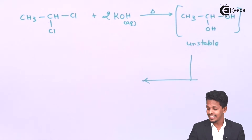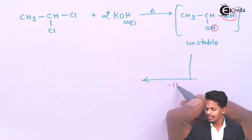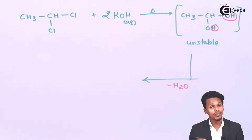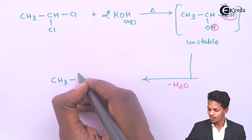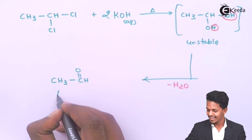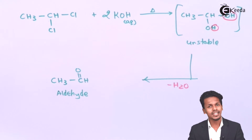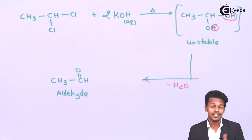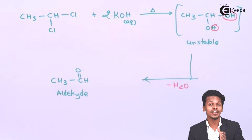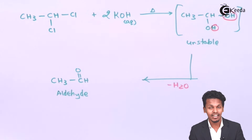The H₂O molecule is removed as a byproduct, and the main product is CH₃CH=O, which is an aldehyde. The IUPAC name for this compound is ethanal. This is how we obtain an aldehyde using a germinal dihalide in which the two halogen atoms are attached to the terminal carbon atom.